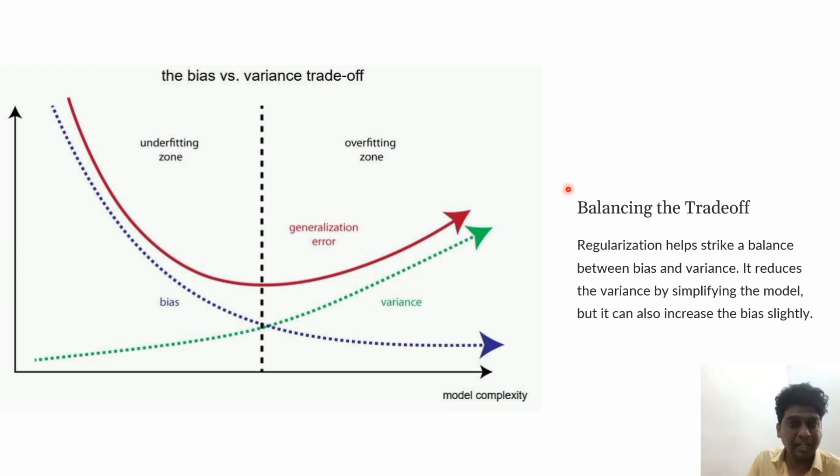There are different combinations between bias and variance. Low variance and high bias leads to underfitting. The correct combination is low bias and low variance, where the model captures data patterns and handles variations in training data. This is the perfect scenario for a machine learning model.